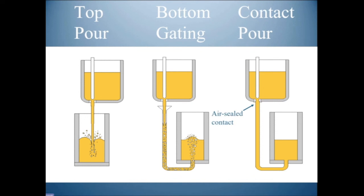The solution is called contact pouring. Instead of leaving the basin open, you connect it directly so the system is sealed. You raise the stopper — no bubbles get into the flow — and the ingot you get is totally different, with completely different properties.